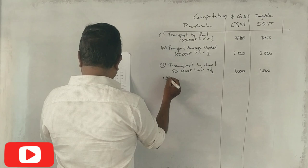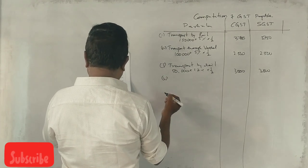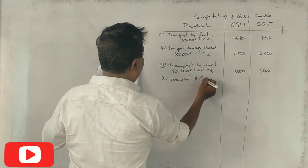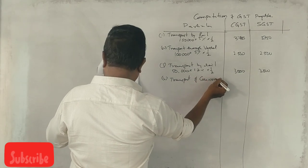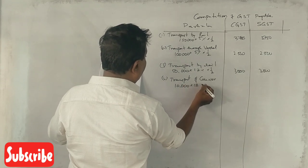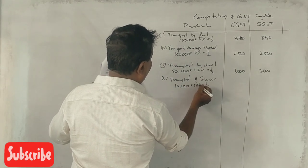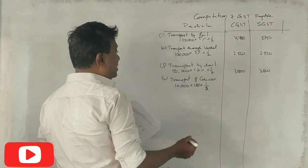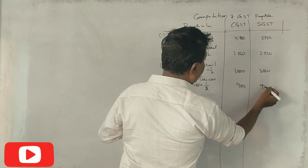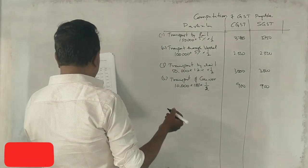Next, transport of courier through courier. How much? 18%. 900 and 900.